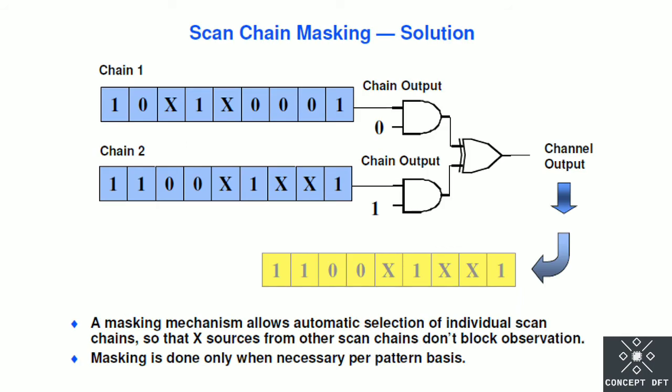The solution for scan chain masking is we will add AND gate at the output of scan chain and we will control that AND gate operation through other nodes. Here we have added AND gate at the output of scan chain and we are going to control the operation through AND gate.